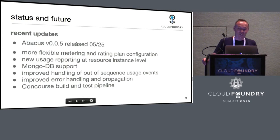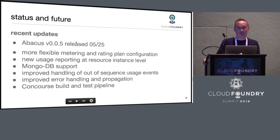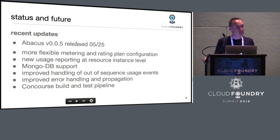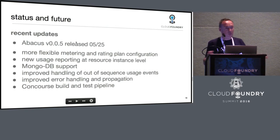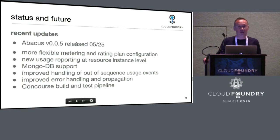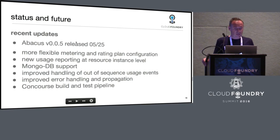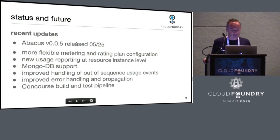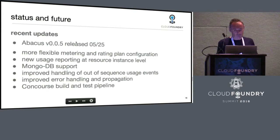We just released version 005 today. Recent updates include more flexible metering and rating plans for IBM production requirements, MongoDB support from SAP, improved handling of out-of-sequence usage from service providers, and a Concourse pipeline contribution from SAP just a few days ago.